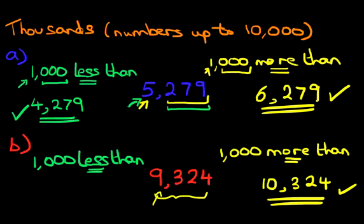We're going to go backwards because it's less than, and again, it's the digit 9 which is going to change. It's going to go back by 1. The answer becomes 8,324.